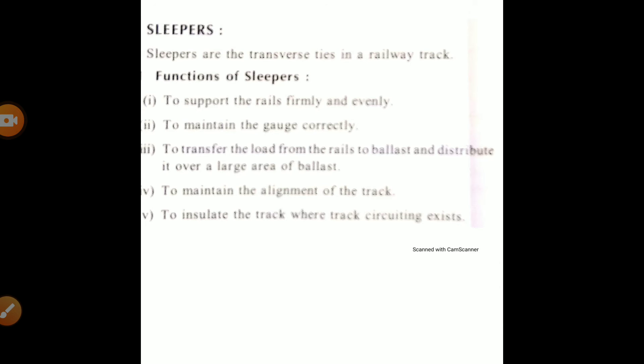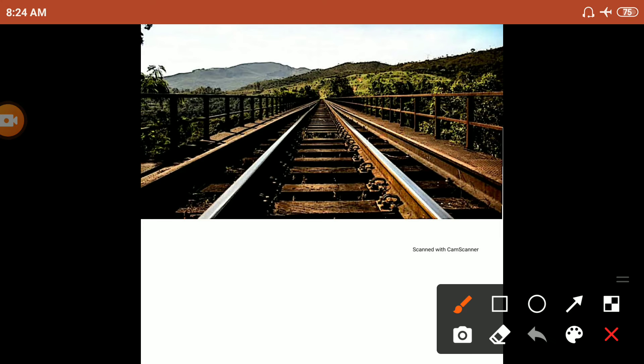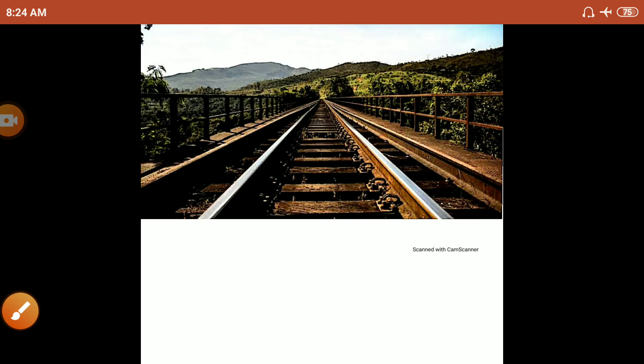The second component is sleepers. Sleepers are transverse ties in the trackbed. There are different types of sleepers; you can use RCC sleepers.